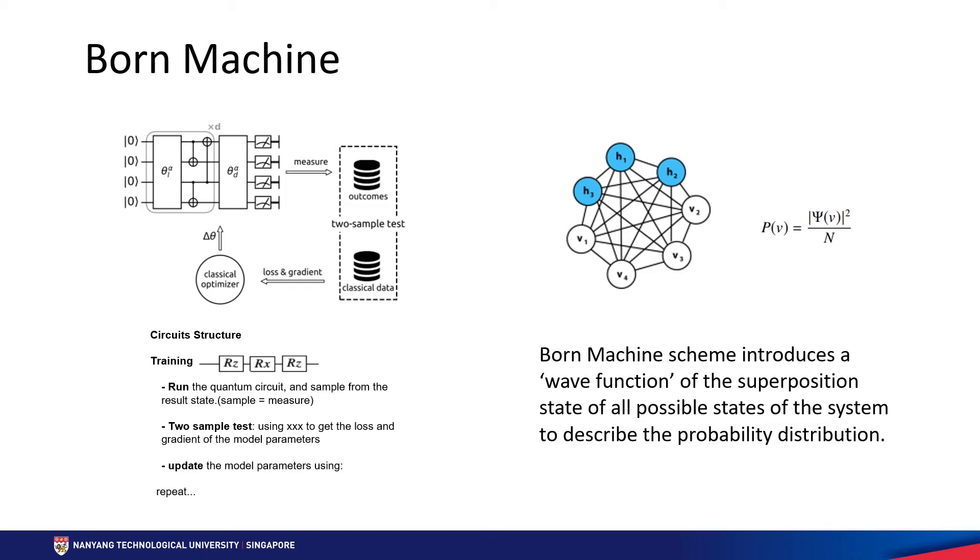Just like classic machine learning schemes, Born machine's scheme has two parts, training and inference. The training of Born machine can be described as four steps. First, initialization: introduce a group of random parameters as the rotating angle theta.